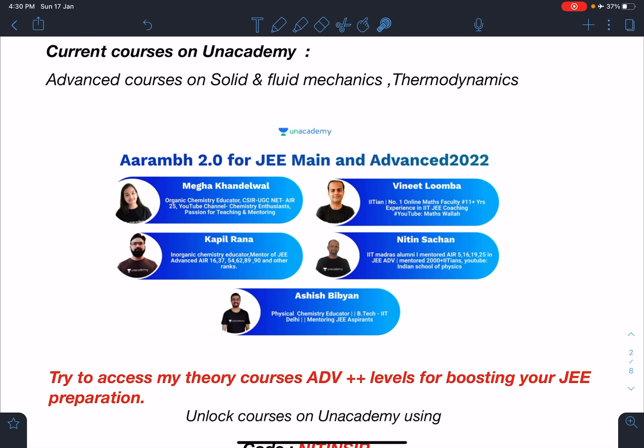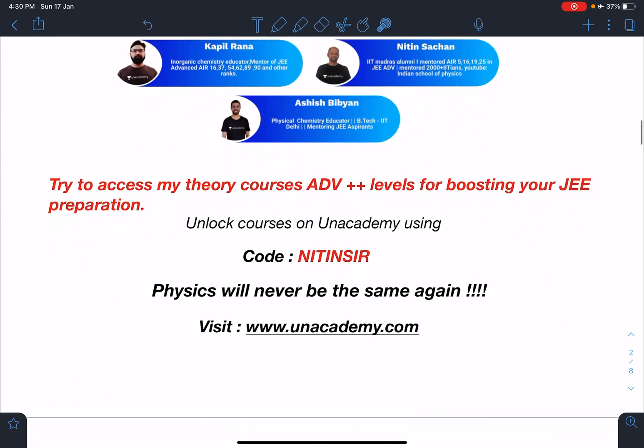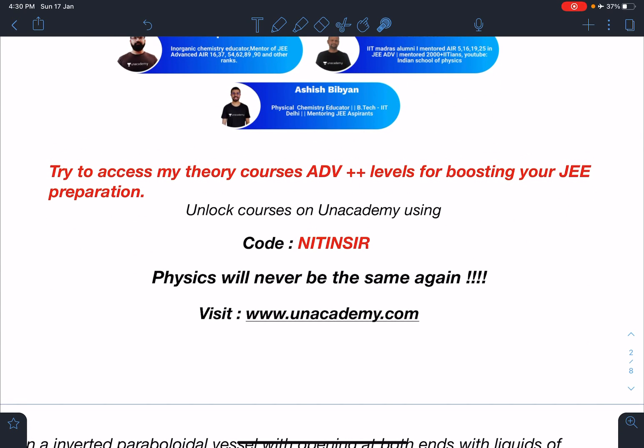You can see their profiles also and access all my theory courses which are advanced plus plus levels for boosting your JEE Advanced preparation. Of course, they will be helpful for Mains as well. You can unlock other courses on Unacademy using my code. Whenever it is prompting for passcode or invite code, you can use the code NITIN SACHAN to access all the free courses available on Unacademy. These courses are very well designed and in-depth courses. Trust me, after doing that, physics will never be the same again for you. For more information, you can visit www.unacademy.com.